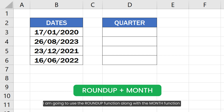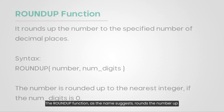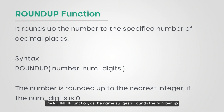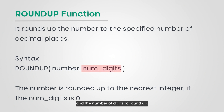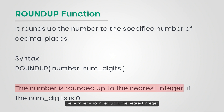I am going to use the ROUNDUP function along with the MONTH function to calculate the quarter number of the year. The ROUNDUP function, as the name suggests, rounds the number up to a specified number of decimal places. This function accepts two arguments: the number we want to round up, and the number of digits to round up. If the second number of digits argument is zero, the number is rounded up to the nearest integer.